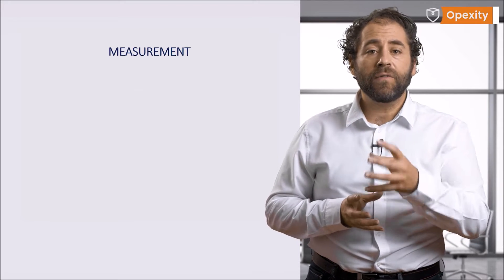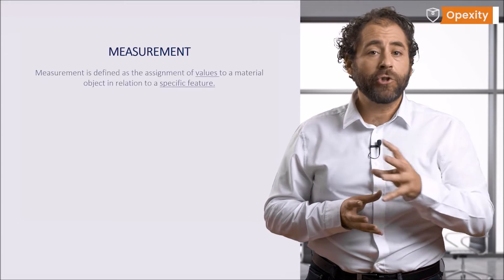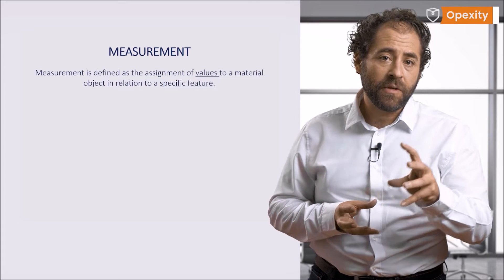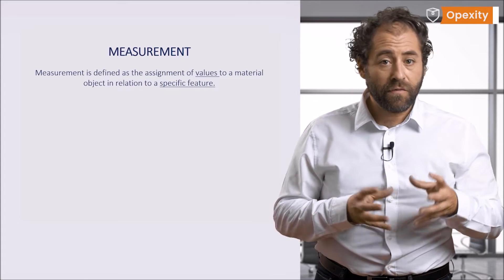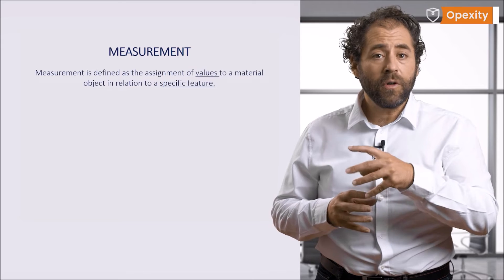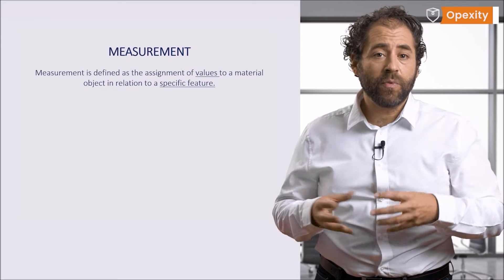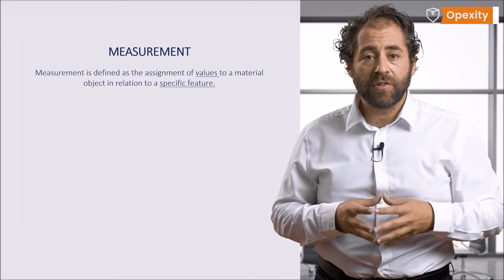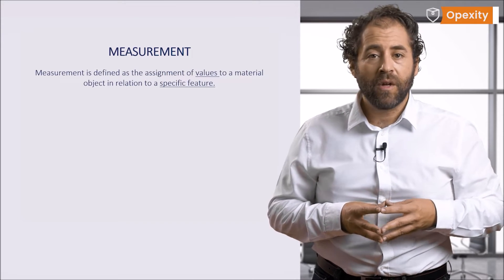What is a measurement? Here we'll have two definitions of this term. According to the first, measurement is defined as the assignment of numbers or values to material things in order to represent the relations among them with respect to particular properties.